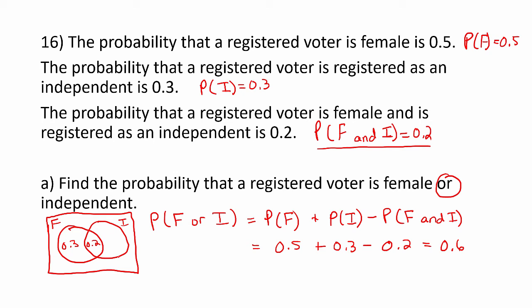The same process for independent voters, 0.3 minus 0.2 is 0.1. And if we add up those three probabilities, we get 0.6.